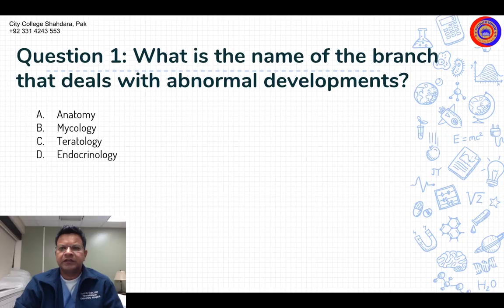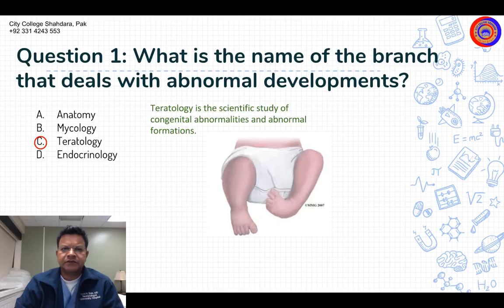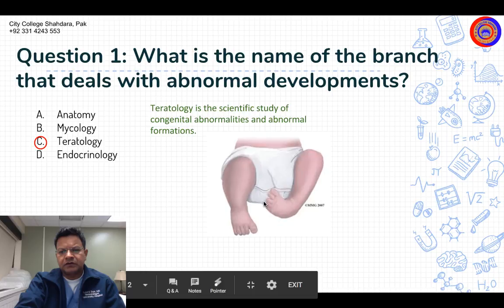Question number one: What is the name of the branch that deals with abnormal developments? Options are: mycology, teratology, and endocrinology. The branch that deals with abnormal development — which is saeedri ke se nahi bani — the answer is teratology.